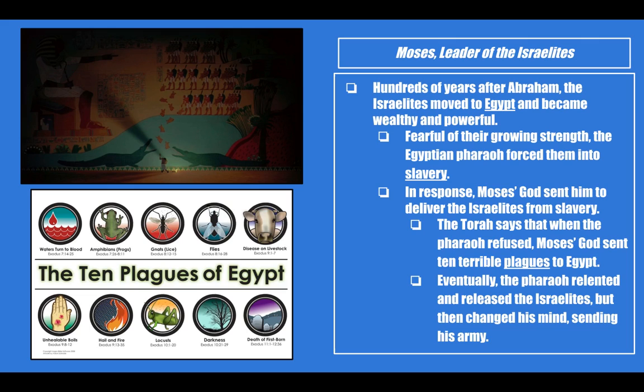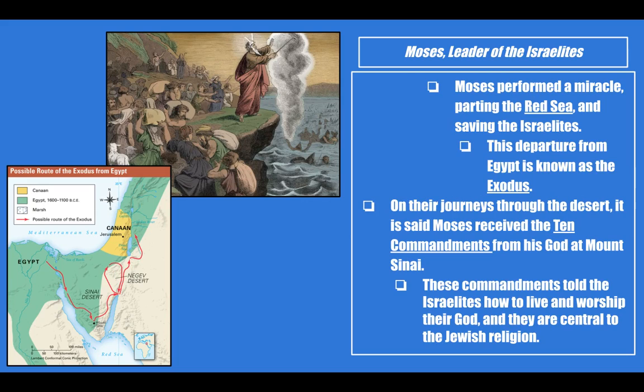Here are the 10 plagues of Egypt: water turns to blood, frogs, lice, flies, disease on livestock, unhealable boils, hail and fire, locusts, darkness, and finally death of the firstborn son. We'll see these when we watch the Prince of Egypt. After the Pharaoh sent his army, it is said that Moses performed a miracle parting the Red Sea and saved the Israelites. This departure from Egypt — where they fled from the Pharaoh to freedom — is known as the Exodus.